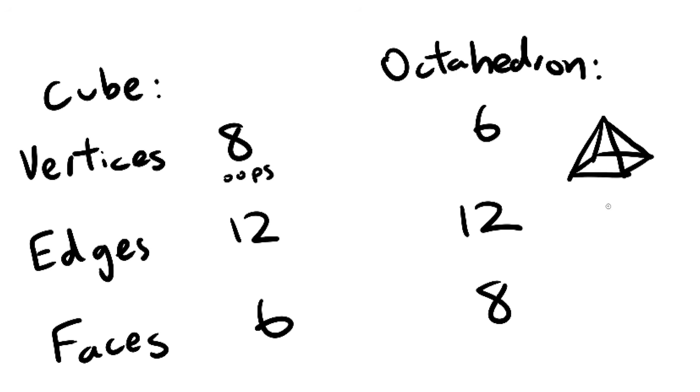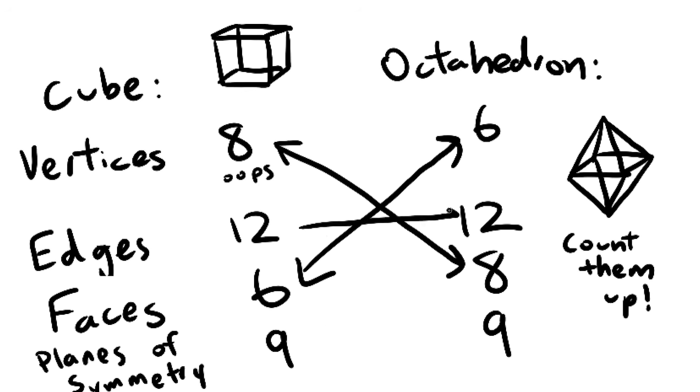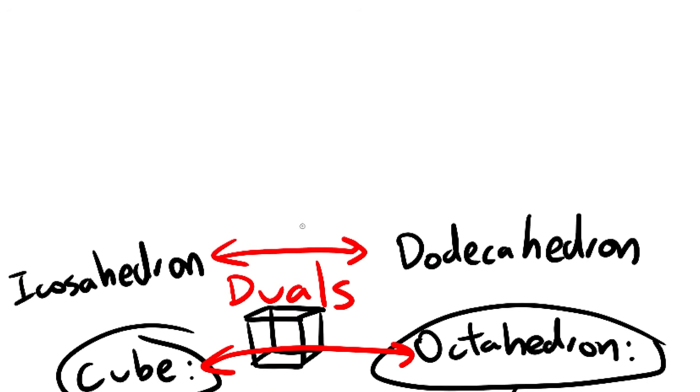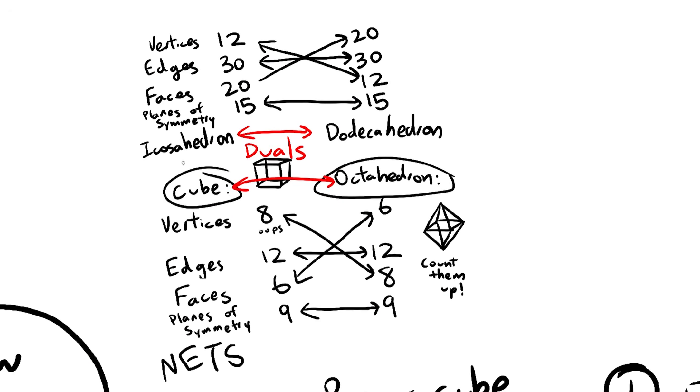Dual polyhedra have a lot of things in common, but I won't go into that. You just need to know that each polyhedron has a counterpart. So yeah, each pair of duals has the same number of nets, which makes sense. I mean, they have all these other things in common.